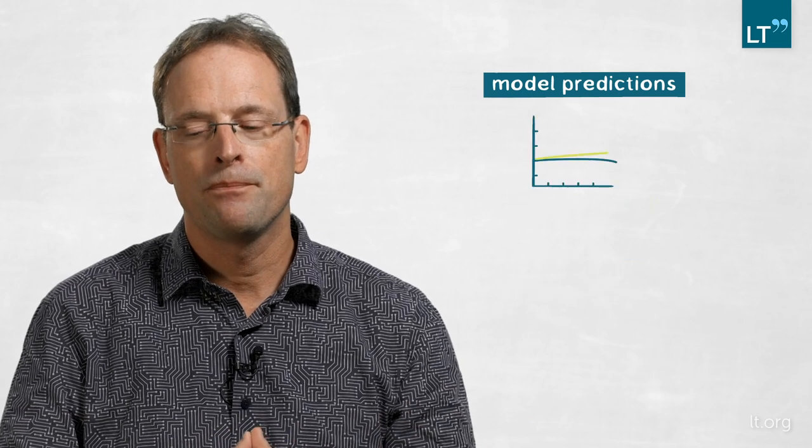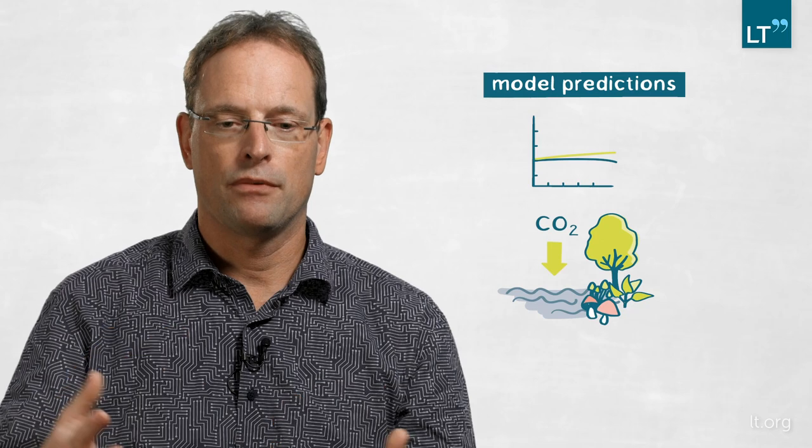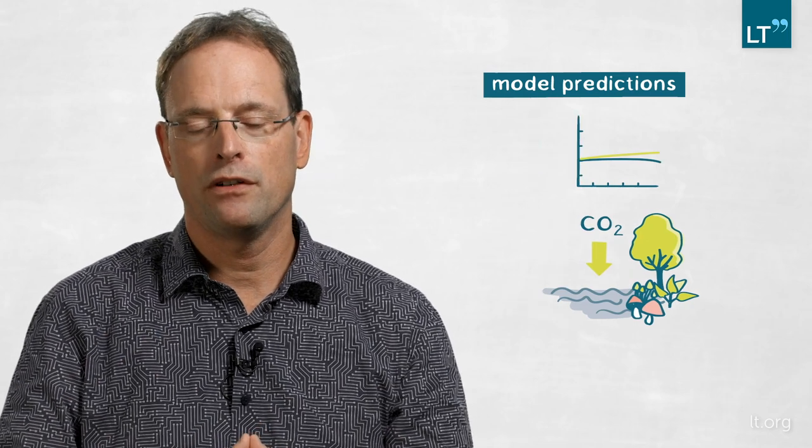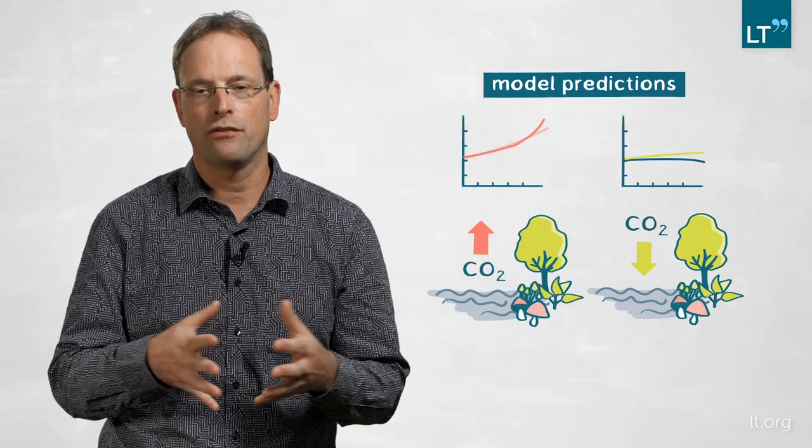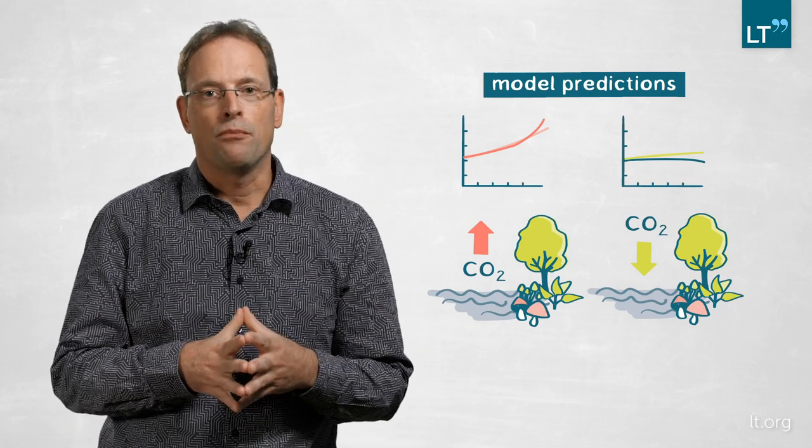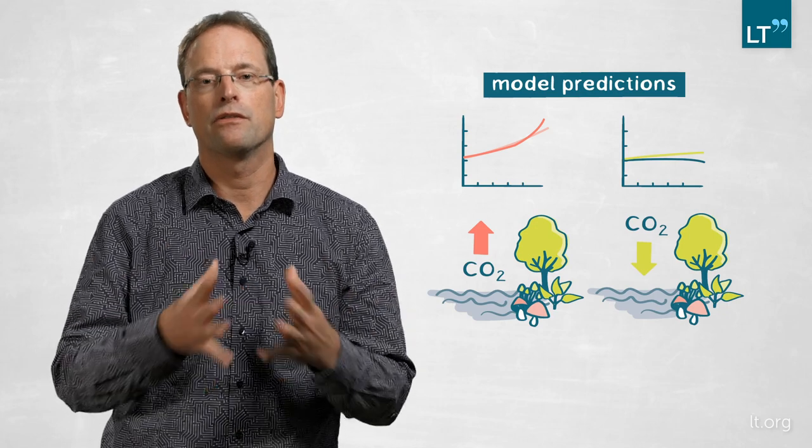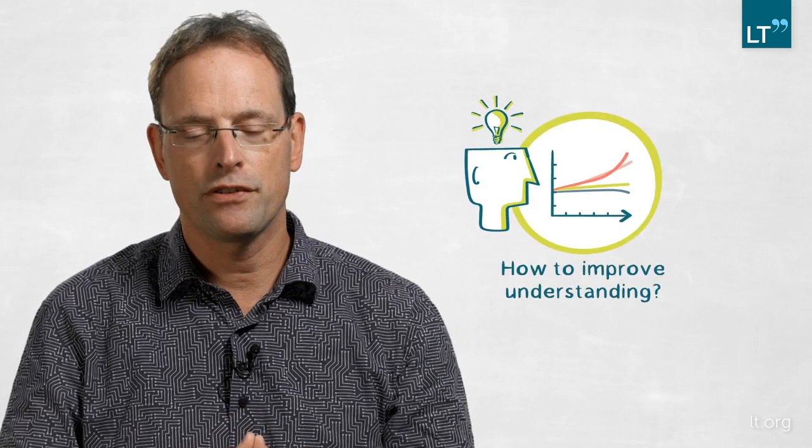Some models say yes, this will continue, that the ecosystems will take up carbon from the atmosphere. And others say no, there will be a reverse of that and there will be actually even more carbon dioxide emitted from those ecosystems in the future, which will actually exacerbate the greenhouse effect at the end. And our question is basically, how can we change this? How can we improve this understanding?